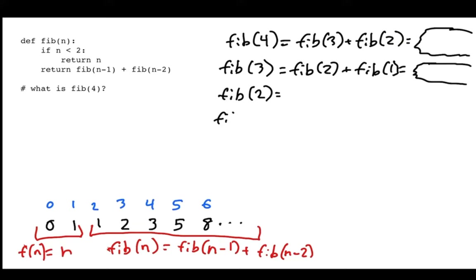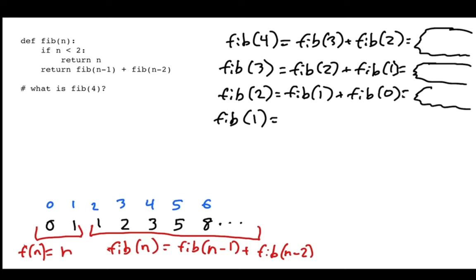I need to keep track of all the things I have to solve. Fibonacci of 2: I haven't hit my base case yet, so I get Fibonacci of 1 plus Fibonacci of 0. I already have Fibonacci of 1 on the board, but I need to add Fibonacci of 0. It turns out both of these are base cases — both numbers are less than 2. So Fibonacci of 1 is 1, and Fibonacci of 0 is 0.